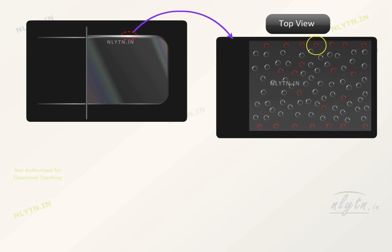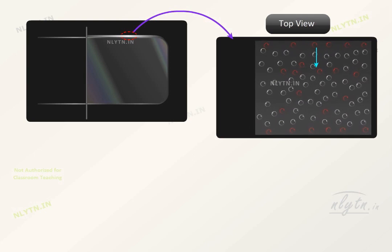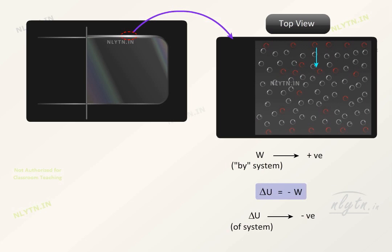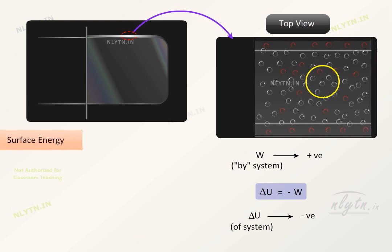We can also say that as a molecule on the surface has a net force towards the bulk of the fluid, so when the molecule on the surface moves in the direction of the net force, positive work is done by the system and thus the potential energy of the system is reduced. This means that the molecules on the surface have higher potential energy as compared to the molecules inside the bulk. This extra energy possessed by the surface of a fluid is called the surface energy and is measured as the energy per unit area of the surface.